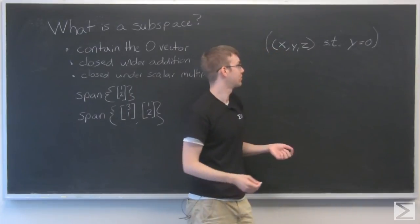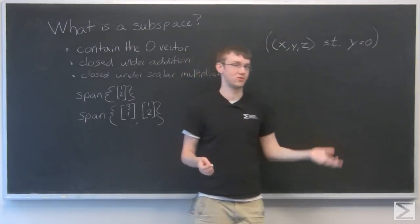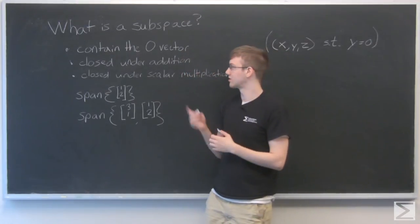One, does it contain the 0 vector? Yes. Y has to be 0, and I can just choose x and z to be 0. So yes, it contains a 0 vector.